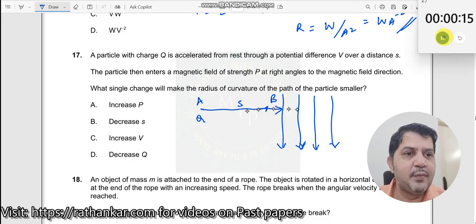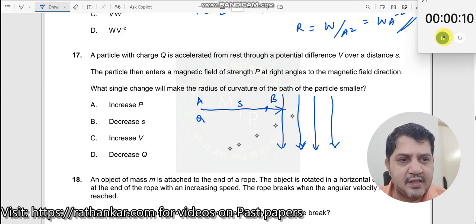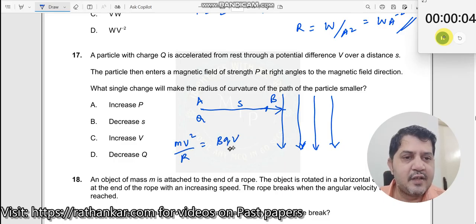Now, if it describes a circle, what is the radius of the circle? How do I determine? What I will do is, whenever a particle describes a circle, I will be using MV square by R is equal to BQV - circular motion.